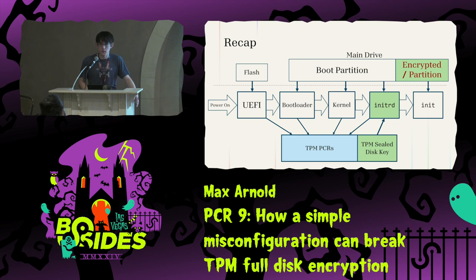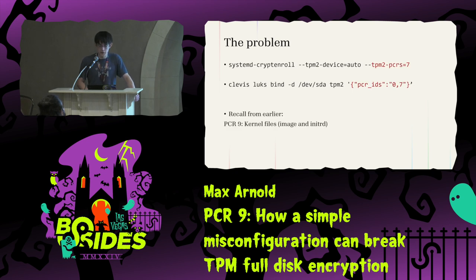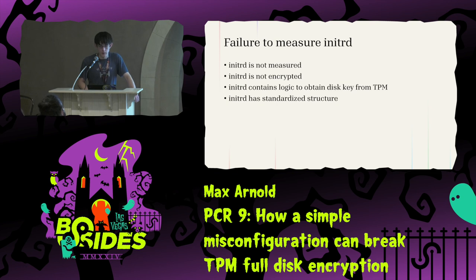In theory this is a great system — your computer boots up fine, and assuming your login screen is secure there's nothing an attacker can do with a turned-on computer, and if they try to tamper with the disk it's all encrypted. But there's a problem. If you look online for tutorials on TPM automatic encryption, you'll see command lines that say to use a utility like systemd-cryptenroll or clevis, and they'll specify PCRs to use — usually saying the default is PCR7 for secure boot, or maybe add PCR0 to check firmware. This is missing PCR9, which means the kernel image and initRD are not measured. That's a pretty big problem. As attackers, we notice: initRD is not measured, it's not encrypted, it has the logic to obtain the disk key from the TPM, and it has a well-known structure. So what if we just modify it to print out the key?